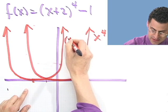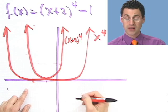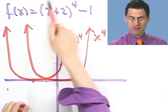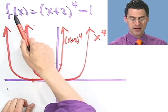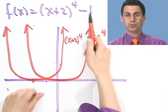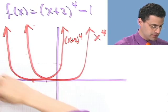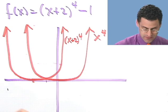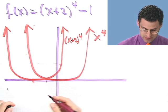Now I'm ready for the final picture. I take everything and subtract 1 — that means I take every y value and deduct 1 from it. That's a shift down by one unit. So I take the shifted curve and move it down one unit, giving me the final graph of (x+2)⁴ - 1.